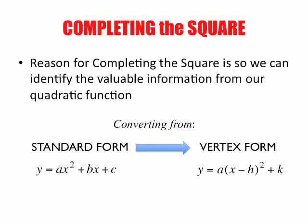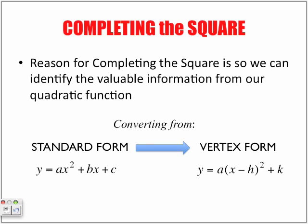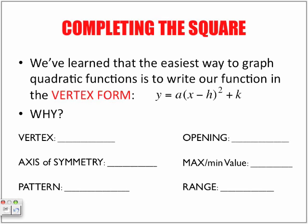Completing the square. The reason for completing the square is so we can identify the valuable information from our quadratic function. So what we're going to be doing is trying to convert from standard form to vertex form. And if we notice here, we can't obtain any information from here as we can from here, here, and here. And that's one of the reasons why we are going to use what we call completing the square to convert from standard form to vertex form.